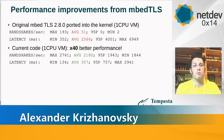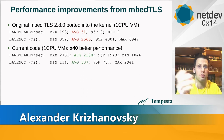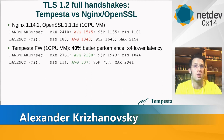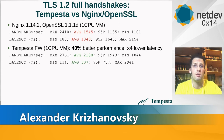Benchmarking the original MbedTLS ported into the Linux kernel against our current implementation, the original is about 40 times slower — which proves how slow MbedTLS is. Comparing our current kernel TLS with OpenSSL and NGINX on a virtual machine, our implementation is about 40% better in TLS connections per second and provides about 40 times lower latency. We also provide better numbers for peak performance and minimum latency.